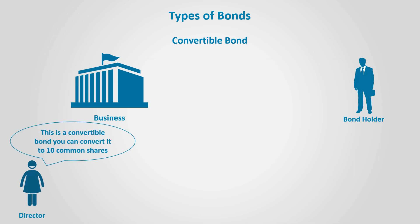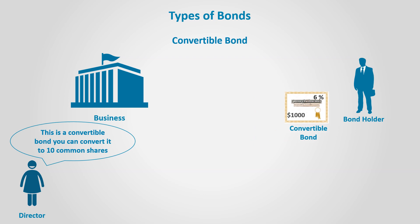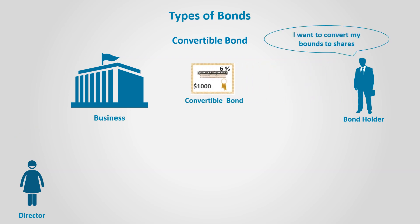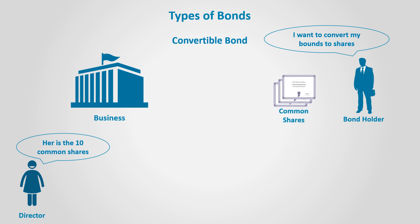A convertible bond can be converted into a specified number of shares, thus transforming the bond holder to a shareholder if they take the decision to convert. The bond holder can convert the bond into shares by returning the bond to the business and substituting it with shares.